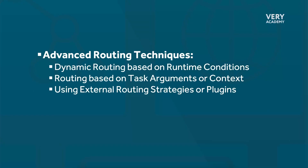Although in this section we are really just looking at basic task routing, task routing in Celery does go beyond simple static routing rules and offers advanced techniques to handle complex routing scenarios. These include dynamic routing based upon runtime conditions, routing based on task arguments or context, and the possibility of utilising external routing strategies or plugins.